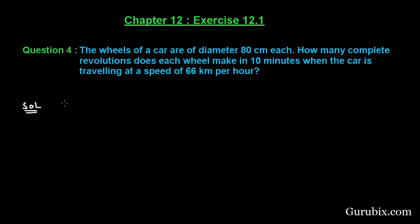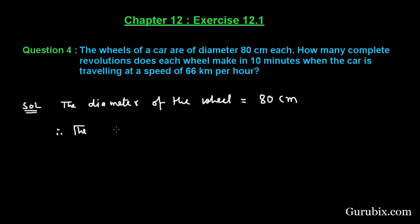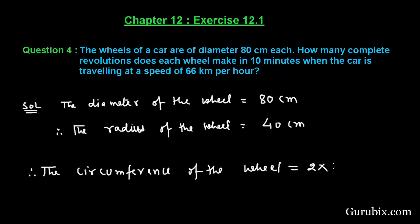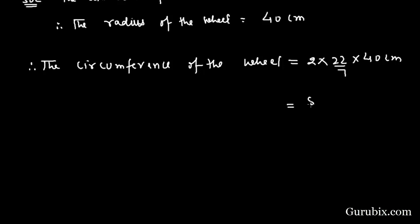We are given the diameter of the wheel, that is 80 cm. Therefore, the radius of the wheel will be 40 cm. We know that a wheel covers a distance in one round equal to its circumference. Therefore, we shall find the circumference of the wheel. The circumference will be 2 pi r, where pi is 22 over 7 and r is 40 cm, so it equals 80 times 22 over 7 cm.